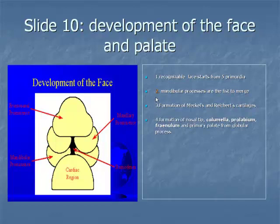Item 4: the median nasal processes approach each other to form a single globular process that in time gives rise to the nasal tip, columella, prolabium, frenulum, and the primary palate. Continued growth of the maxillary mass below the optic vesicles allows fusion with the nasolateral nasal process.